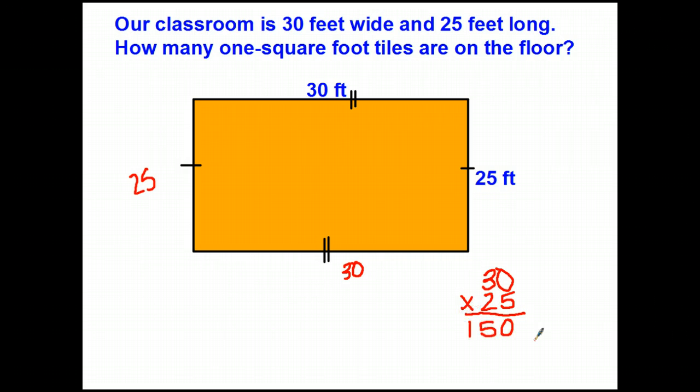I've done my first row, 5 times 0 is 0 and 5 times 3 is 15. Next we'll drop our 0 because we're multiplying by 20 not by 2. 2 times 0 is 0 and 2 times 3 is 6. Add them up and you will see, very quickly, that this rectangle, or our classroom, has an area of 750, 750 what, 750 feet squared.